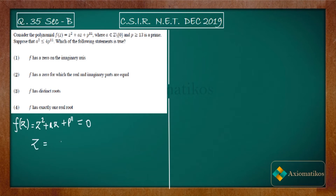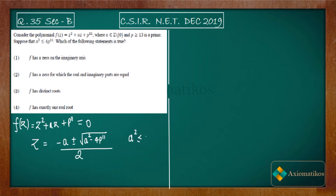Now let us try to find its roots. If f(z) = 0, then z = (−a ± √(a² − 4p¹¹)) / 2. It was given to you that a² ≤ 4p¹¹.